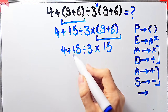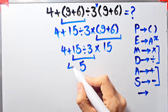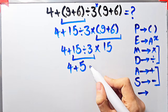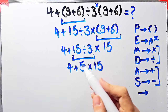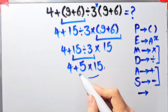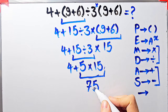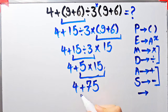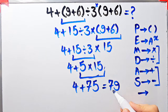We have addition, division, and multiplication. We simplify the division first: fifteen divided by three equals five. Now we have four plus five times fifteen. We have addition and multiplication, so we simplify the multiplication first: five times fifteen equals seventy-five. Now the question is four plus seventy-five, which equals seventy-nine. The final answer of this question equals seventy-nine.